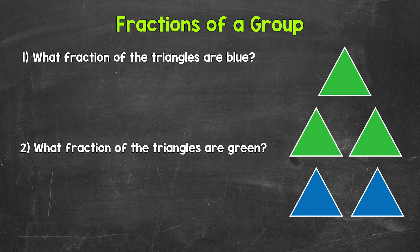Let's start with the denominator. The denominator is going to be the total number of parts in the whole group. That's going to be the total number of triangles here. We have 1, 2, 3, 4, 5 total triangles. So that's going to be our denominator.